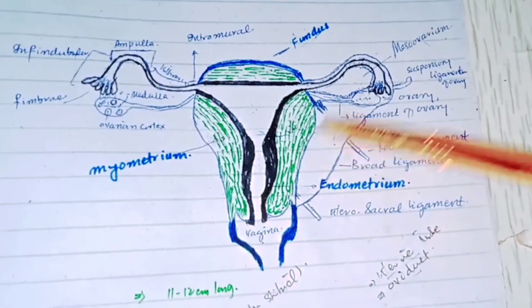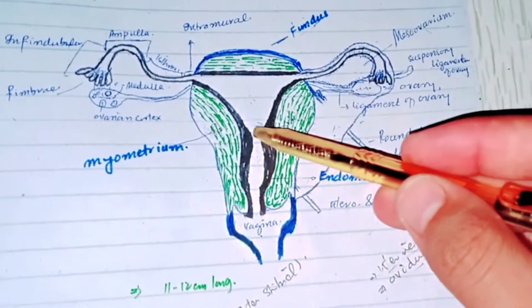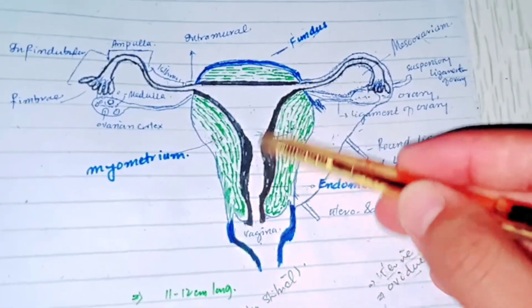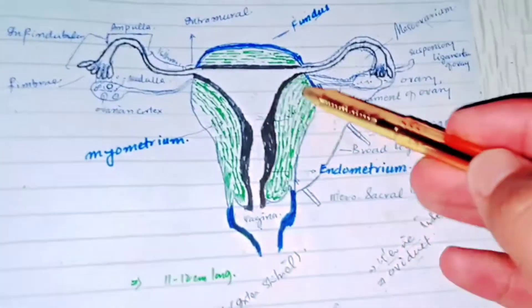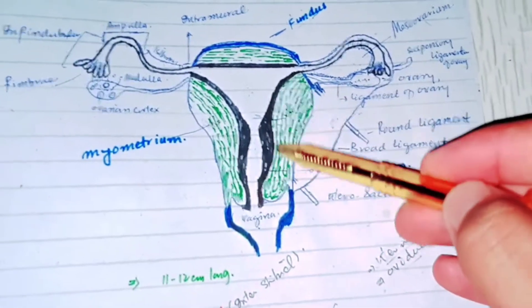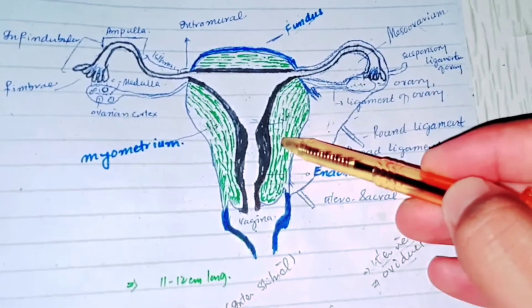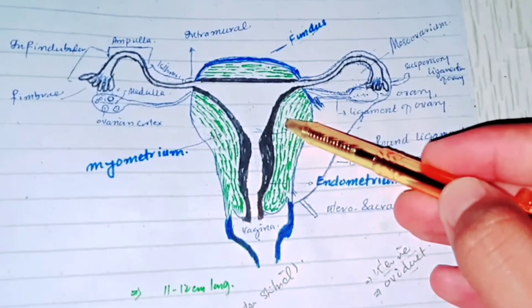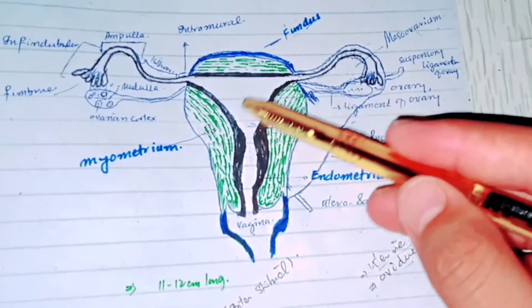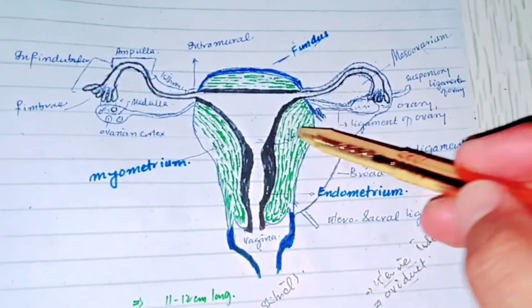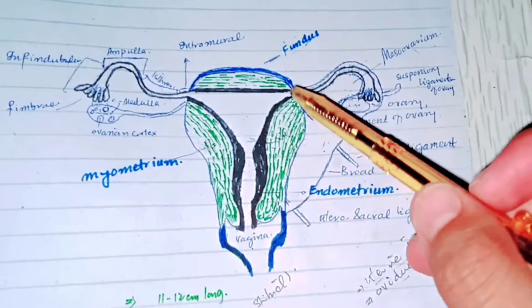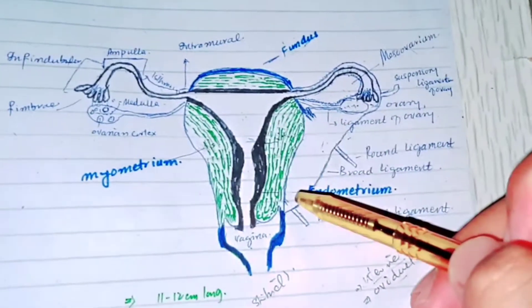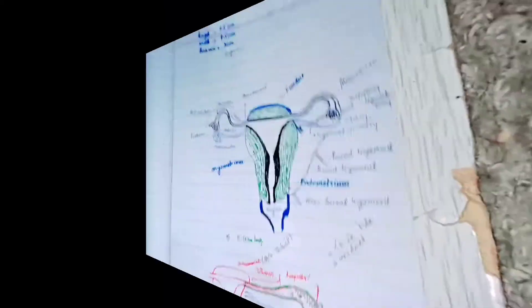The uterus has three layers. One is the endometrium — you can see this black layer is called endometrium, and it is hormone responsive. The other is the myometrium, which is the muscular layer of the uterus. There is another layer present on the uterus called the perimetrium, also called the serosa.